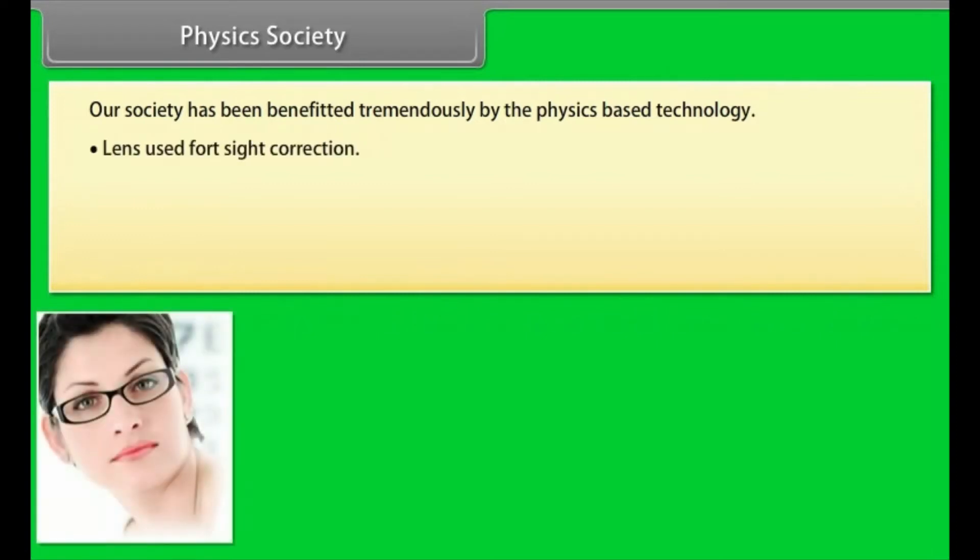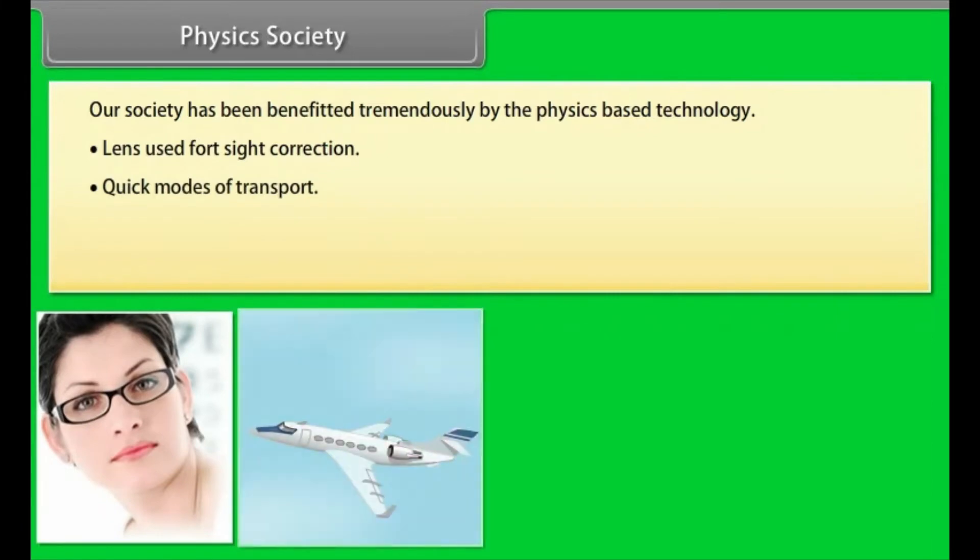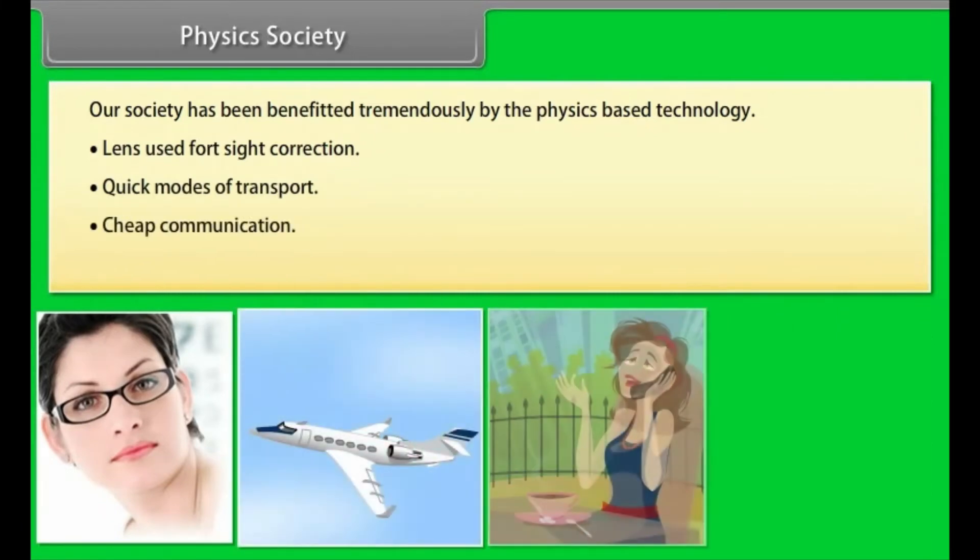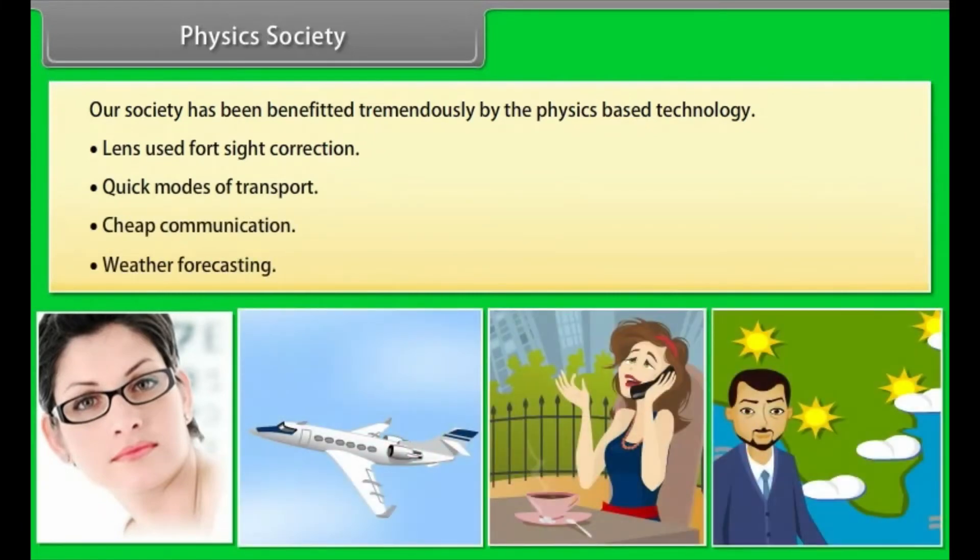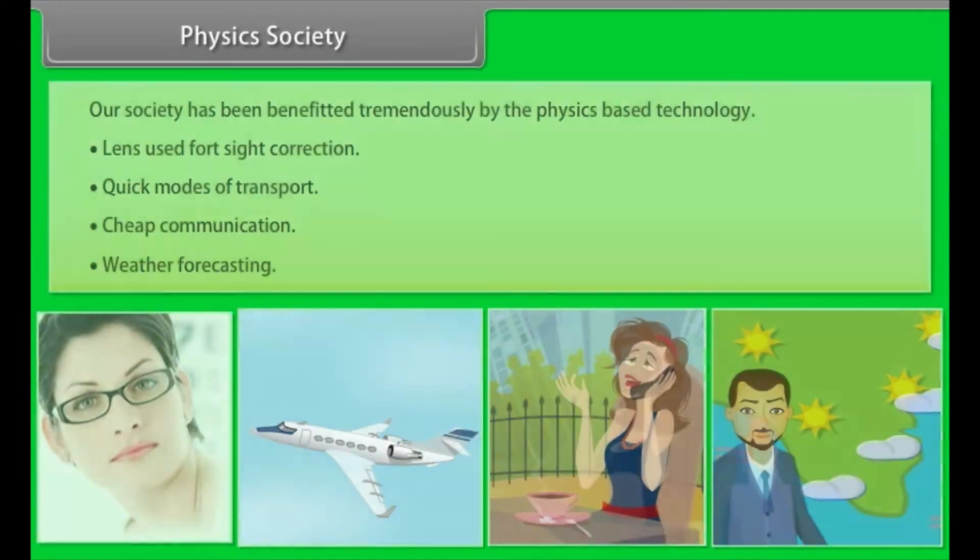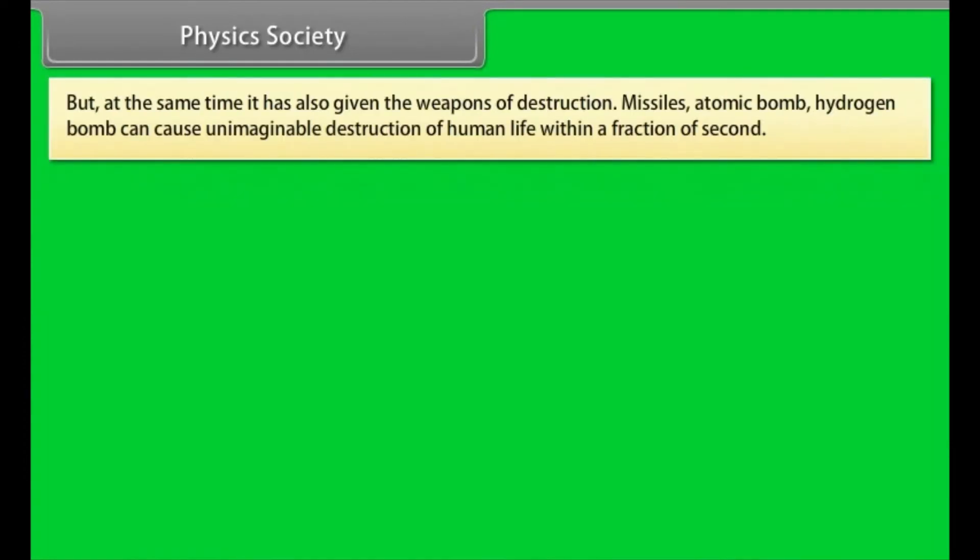Physics and society. Our society has been benefited tremendously by physics-based technology. Lens used for sight correction, quick modes of transport, cheap communication, weather forecasting are some new dimensions of progress due to physics.